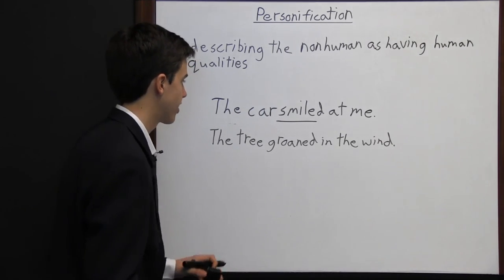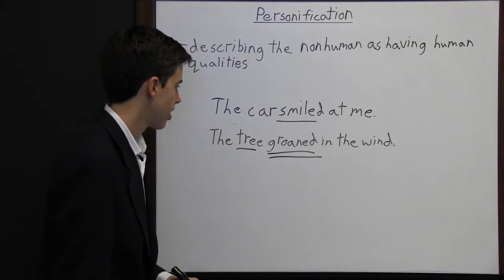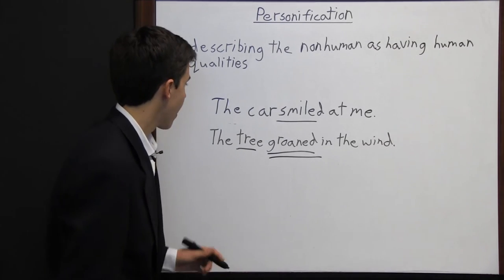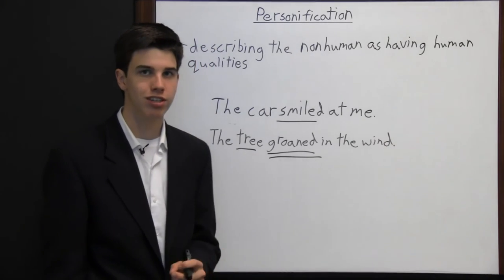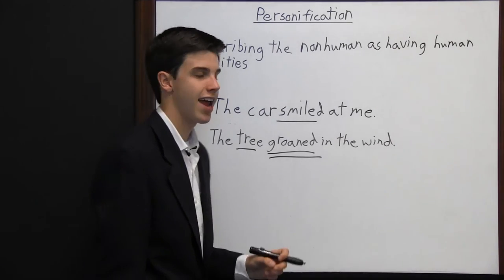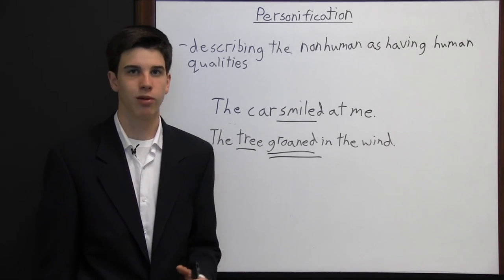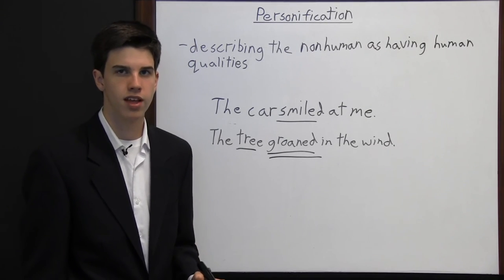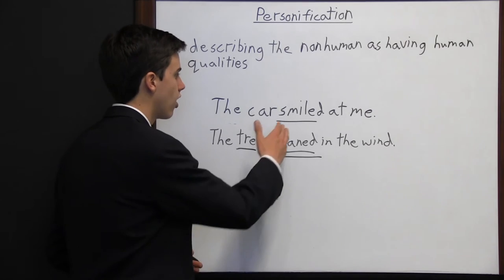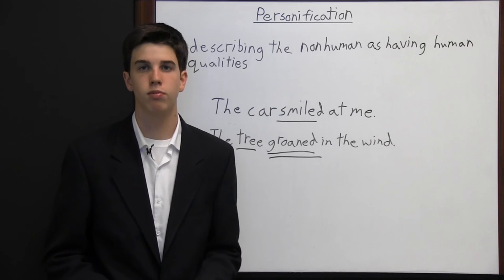"The tree groaned in the wind" is another example of personification. Here the tree is a non-human, yet the author is giving it the human quality of groaning. A tree going back and forth in the wind may sound like it's groaning, but the author is saying the tree actually groaned — which cannot be true because trees don't have mouths. Personification can be used for a variety of reasons, but often it's to make the reader look at something with a different perspective. Consider: "The car looked like it was smiling at me" sounds different than "The car smiled at me." So depending on whatever tone the author is going for, the author may choose to use or not use personification.